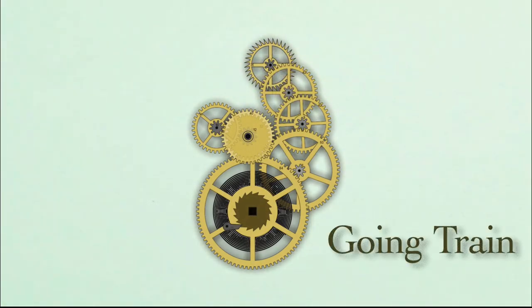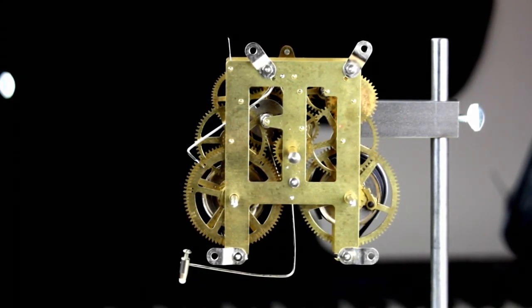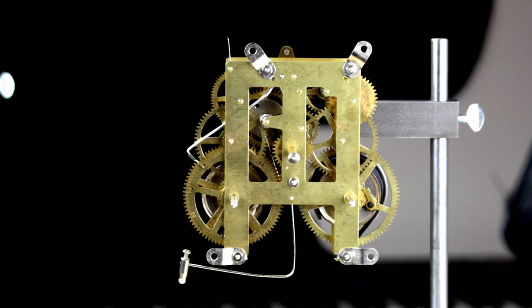The going train is the time train of our clock. It's called the going train because this part of a clock must operate or go continuously if the clock is to accurately keep time. Many clocks have a strike train, or both a strike and a chime train, as well as the going train.